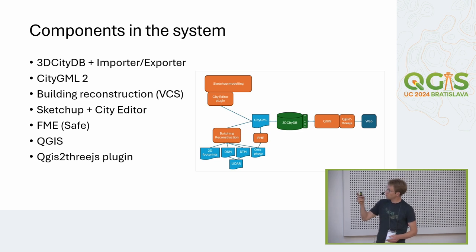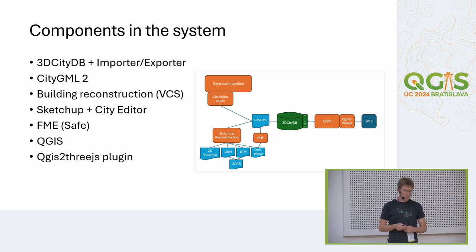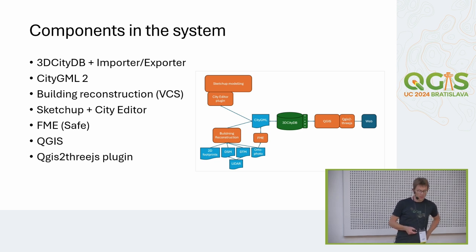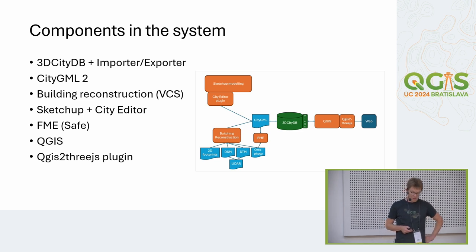We have some other components that I will mention: we have SketchUp and a plugin for SketchUp to communicate with the database for our architects, and we have FME from SAFE for data handling. Then I will go into QGIS and the QGIS2threejs plugin that we use to export the result.